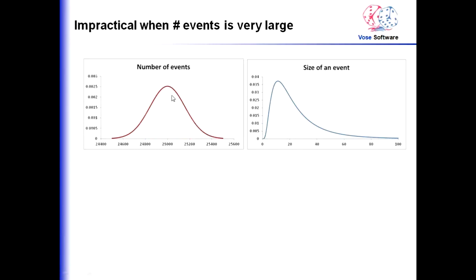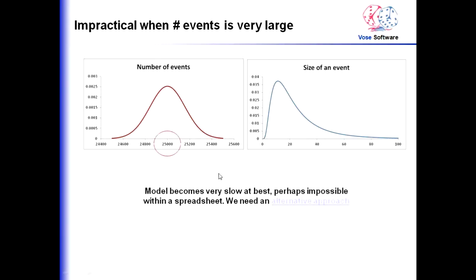But a model like this becomes rather impractical when the number of events is very large. If we have 25,000 events on average instead of 10 or 20 or 30, you can imagine building a spreadsheet with 25,000 cells — even up to 26,000 cells — that's going to take a lot of time. And it could be 25,000 or it could be 25 million. In situations like this we really need a different approach; the model becomes very slow at best and perhaps impossible within a spreadsheet.